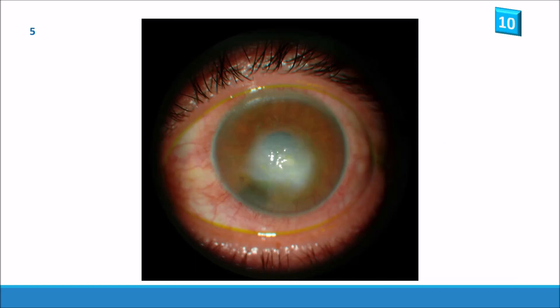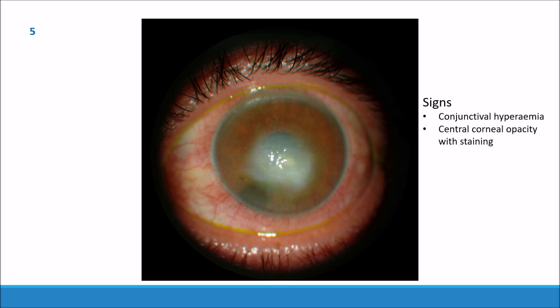Next slide. Here we can see conjunctival hyperemia and a central corneal opacity with some overlying staining. There are quite a few differentials we can have — for example corneal hydrops again, HSV keratitis, and Acanthamoeba — but this patient has disciform keratitis.